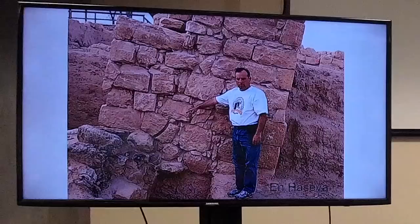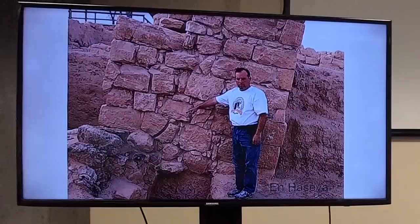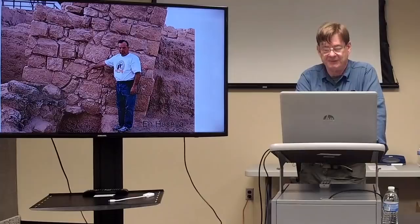At Ein Haseva, south of the Dead Sea, a fortress built in Uzziah's time with a chambered gate shows cracked blocks in the foundation. The foundation failure produces a leaning pier in the tower or gate, and this leaning structure is best understood to be earthquake evidence. There are many such earthquake sites in the mid-8th century B.C.